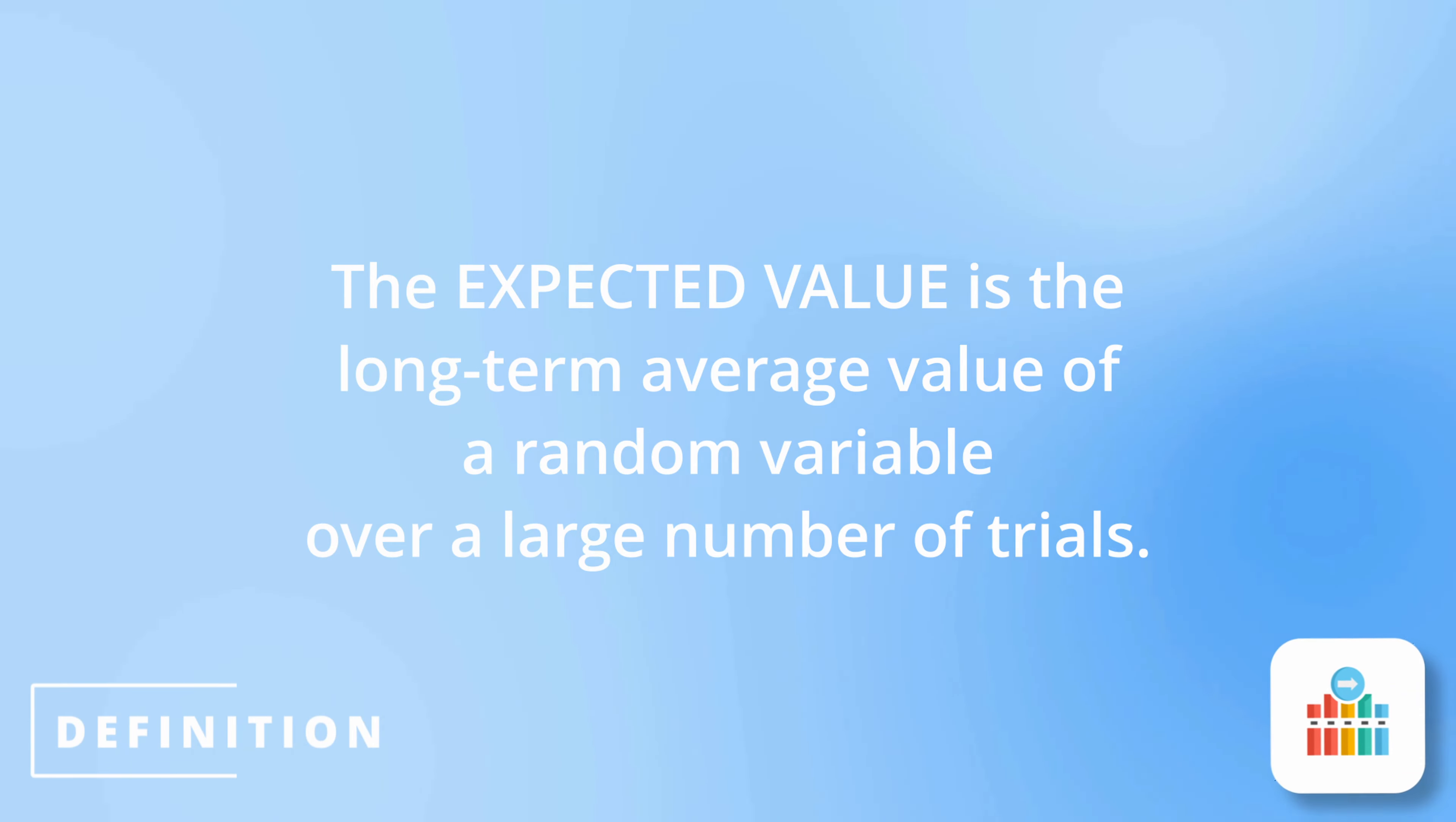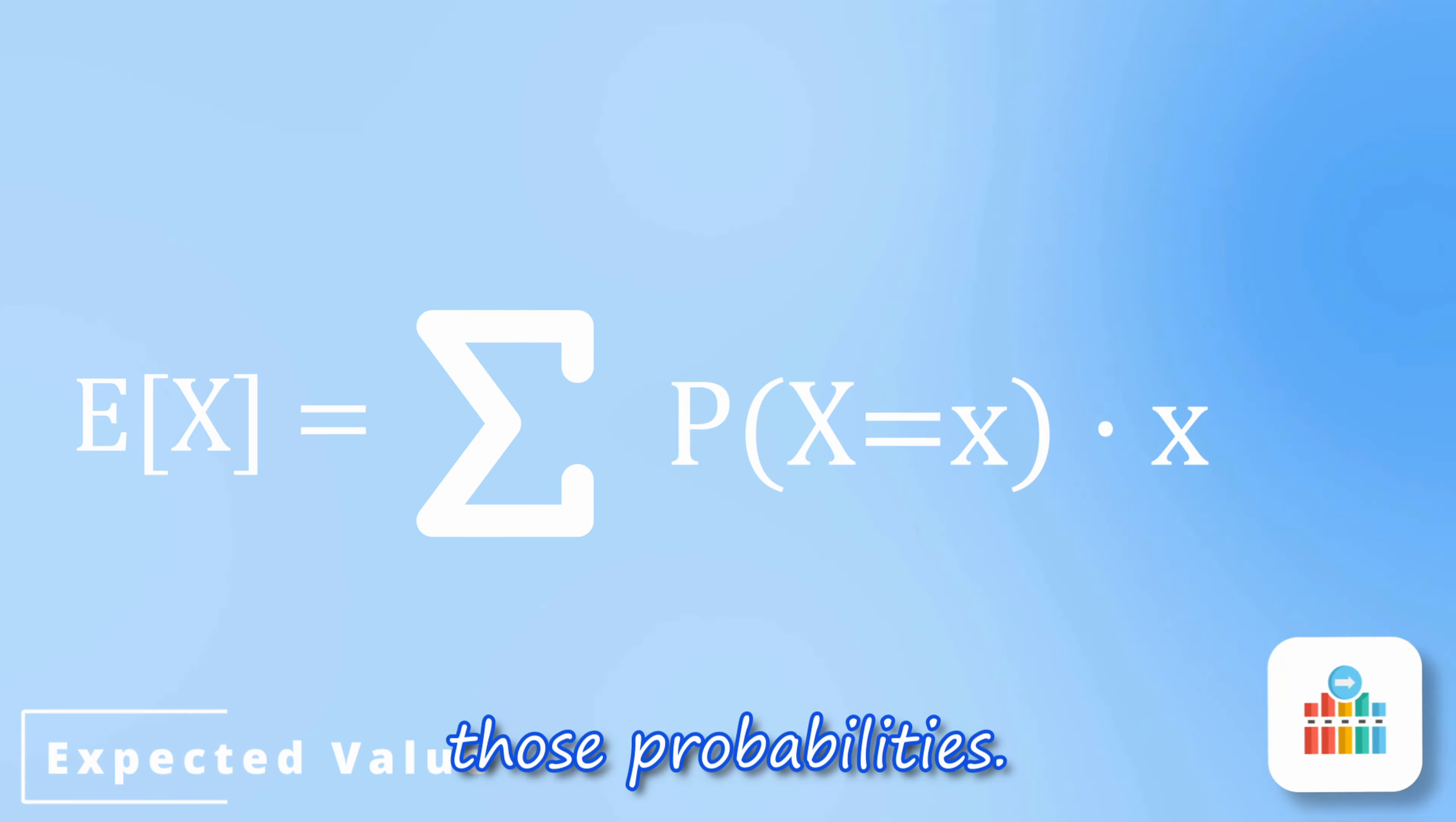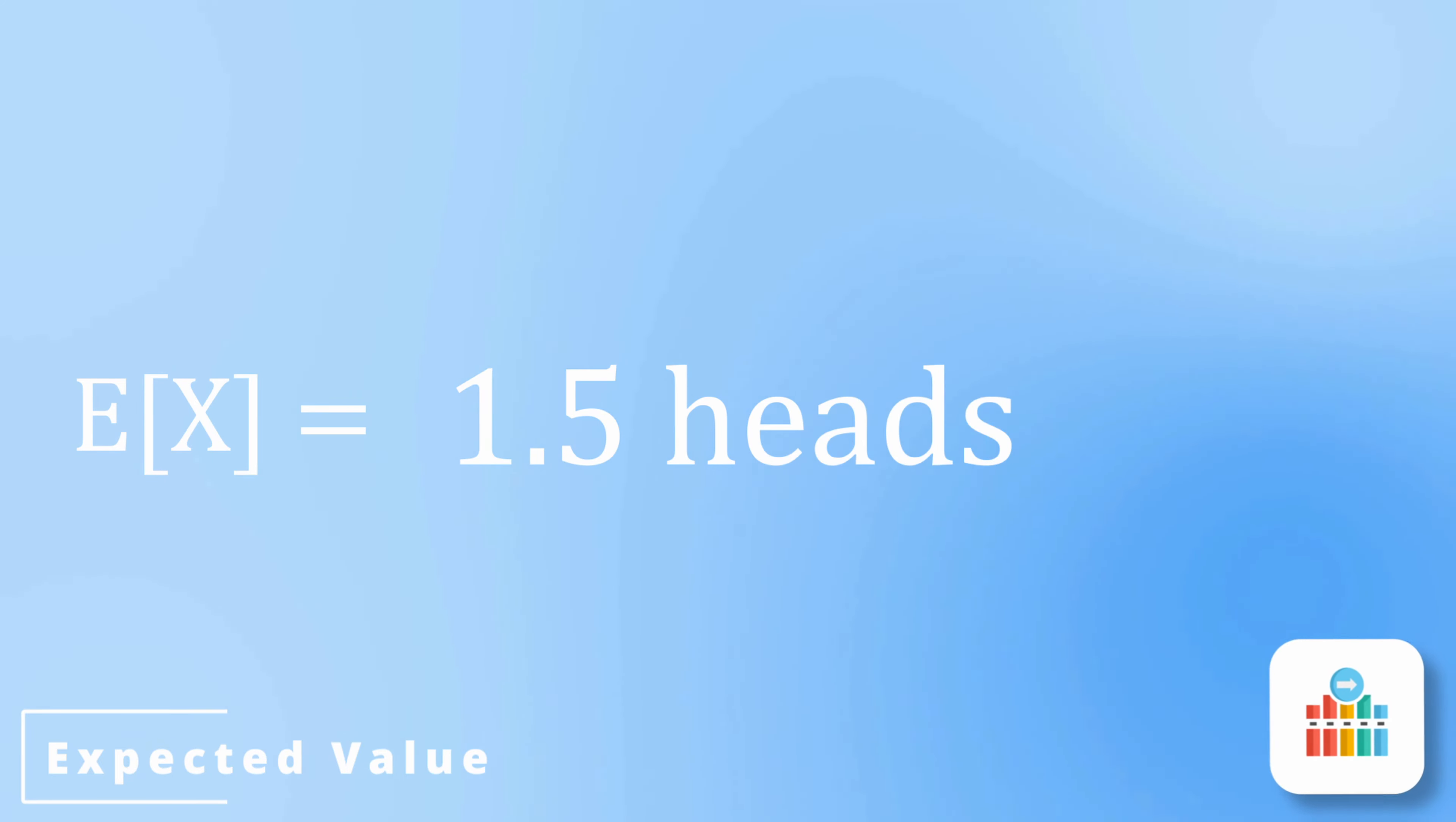Informally, the expected value of a random variable is simply its mean or average. We can calculate the expected value by taking a weighted average of the probabilities and the outcomes associated with those probabilities. So in the coin toss example, when we take the average of the number of heads appearing in 3 coin tosses and weigh it by the associated probabilities from the PMF, we get that the expected value of the random variable is 1.5. So that means on average, we can expect 1.5 heads to appear in 3 coin tosses.